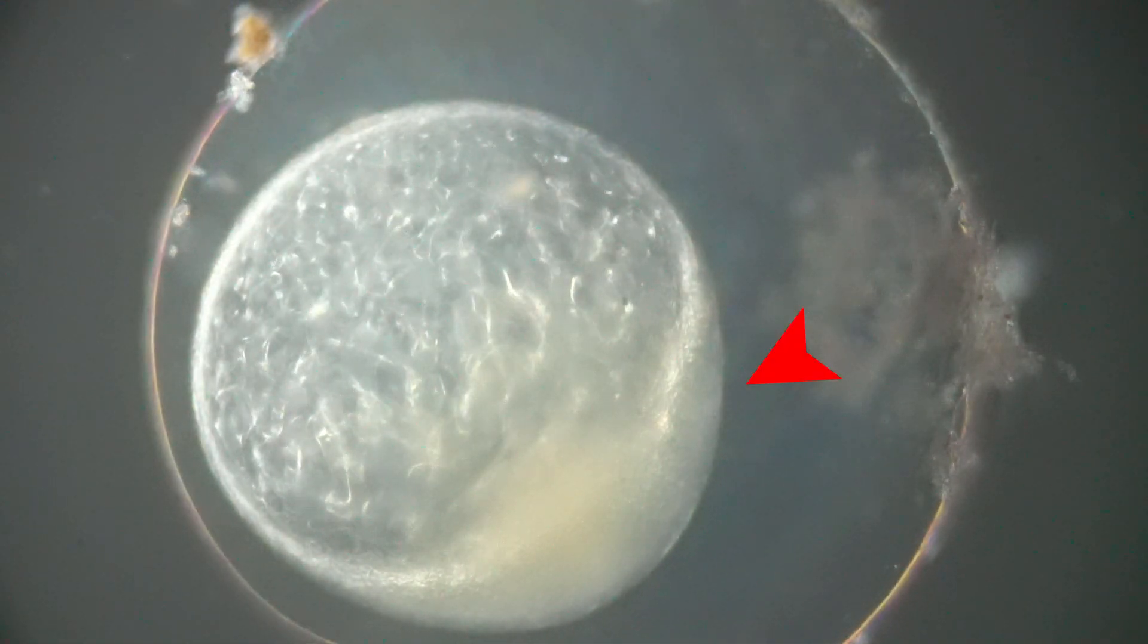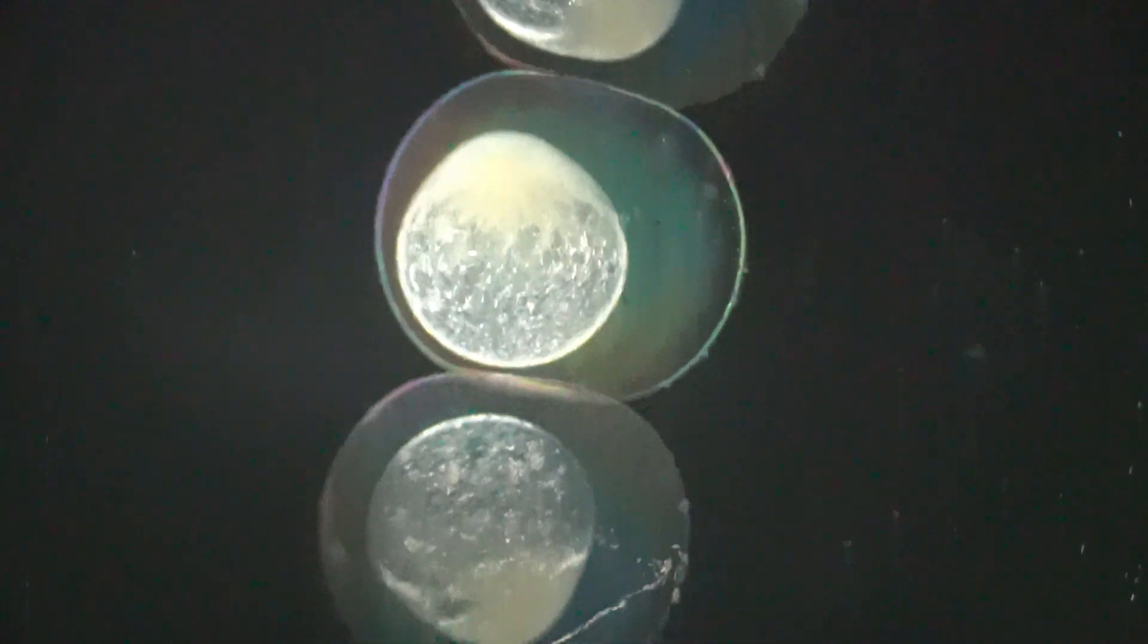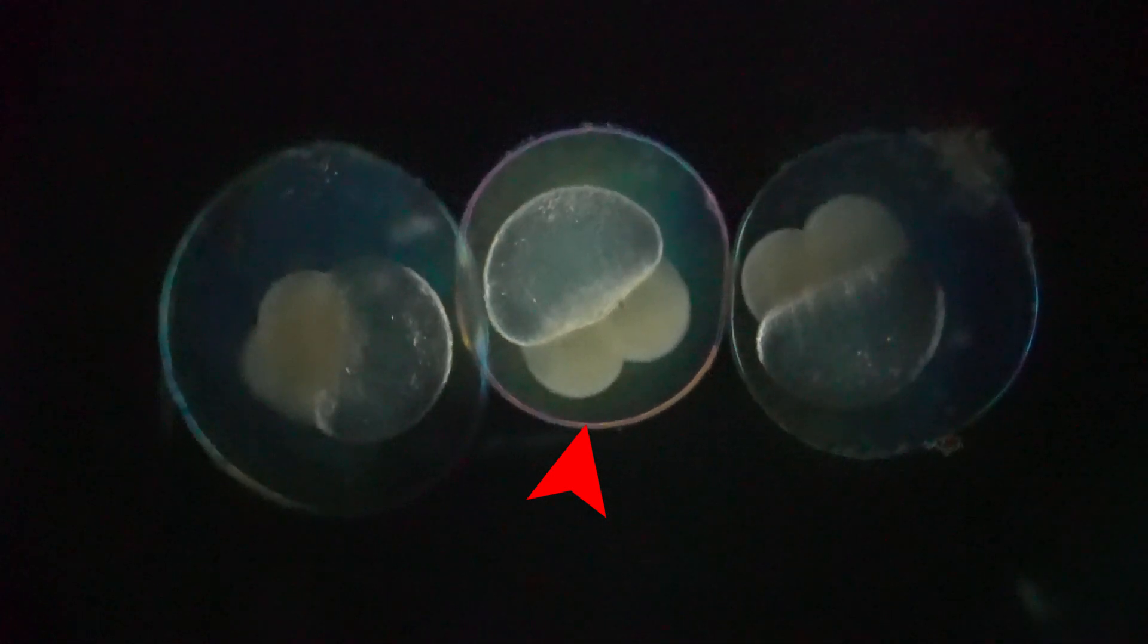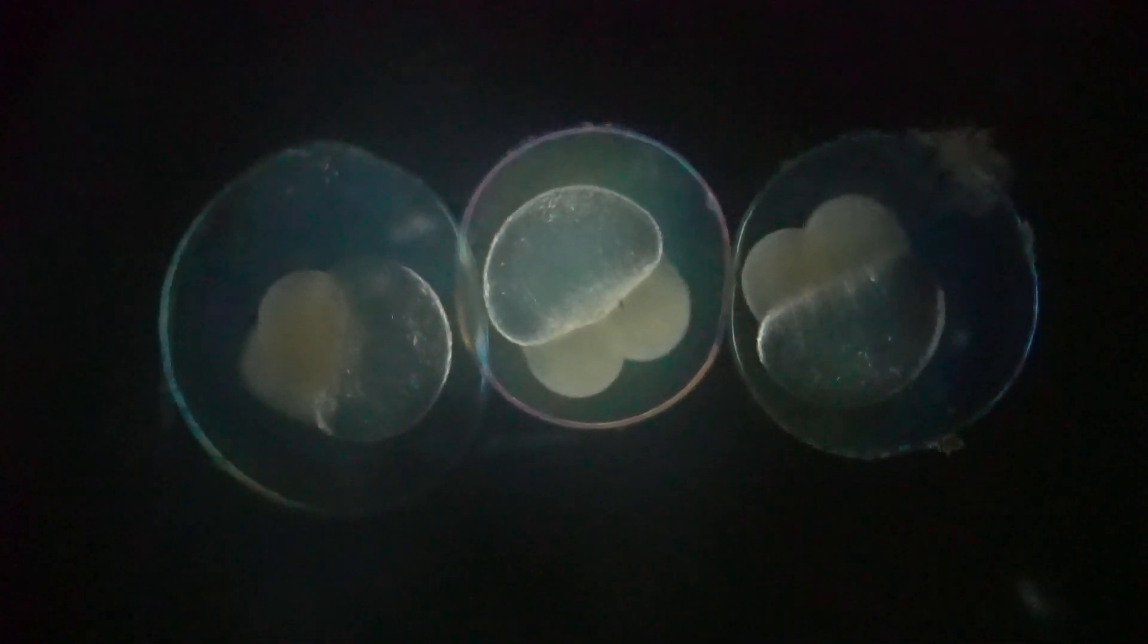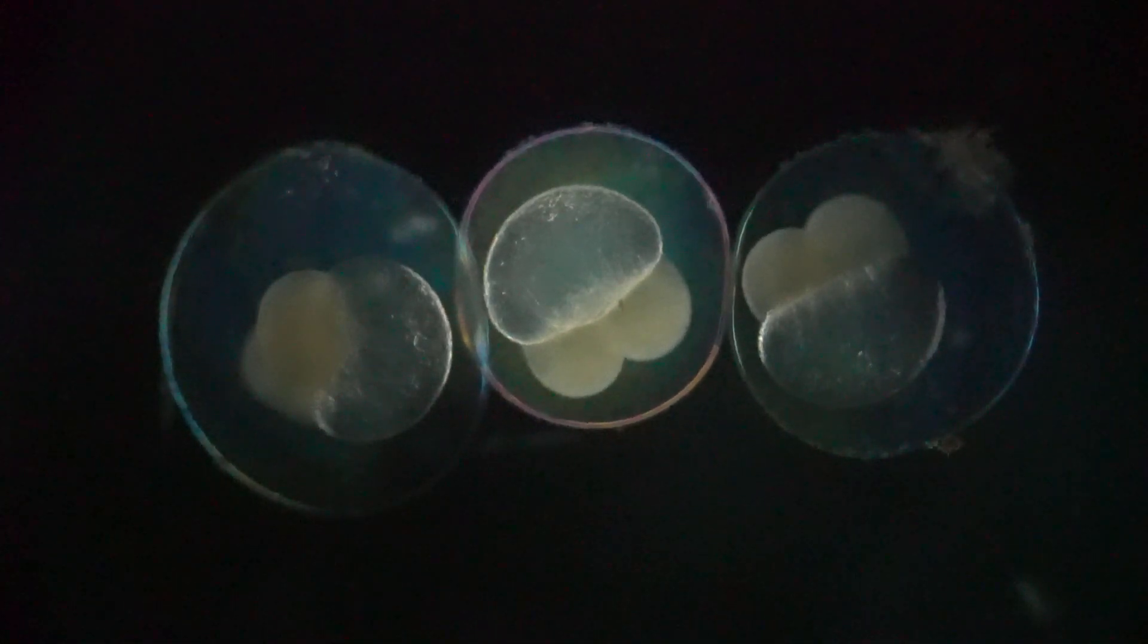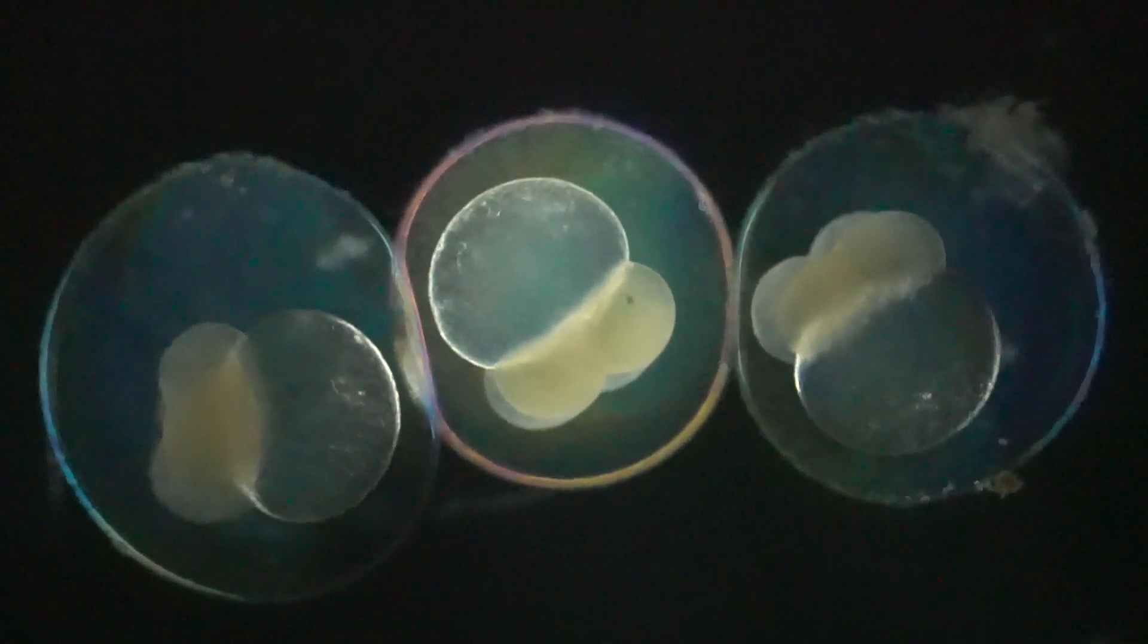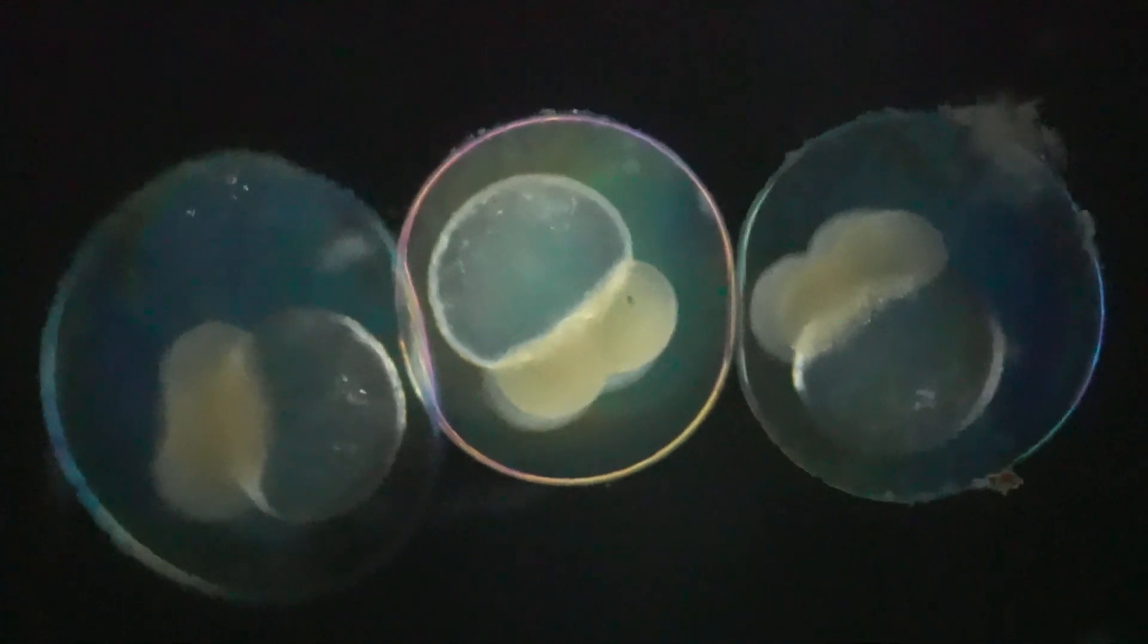Now this blastodisc is really just one cell which starts to divide into two cells. You can see that that blastodisc has developed into two cells. Now these two cells will divide into four cells within minutes. It's really awesome to see these cells dividing right in front of your eye.